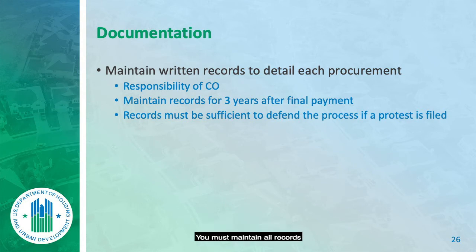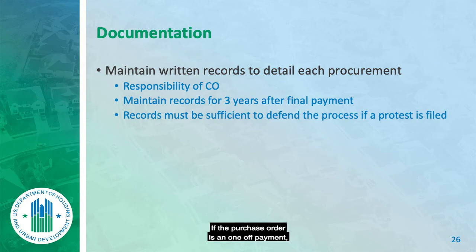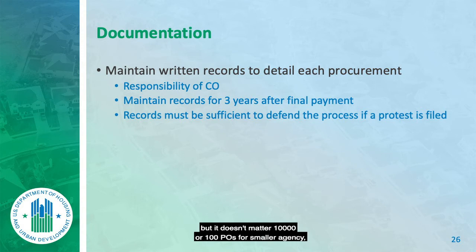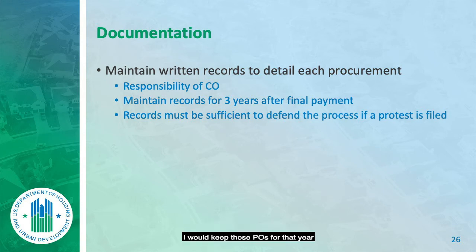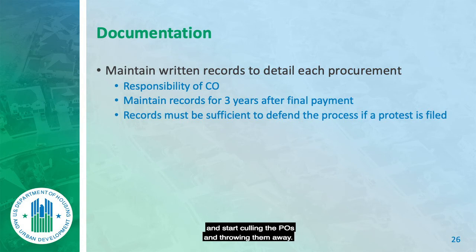You must maintain all records for three years after final payment. Purchase orders for a single one-off purchase should be kept for the year payment was made, then three more years in a file. After four or five years, you can go back and purge old POs. However, for bids and RFPs, keep them longer.